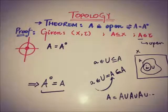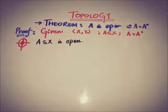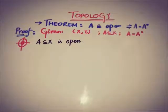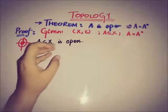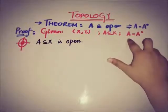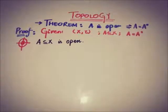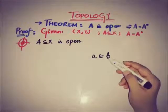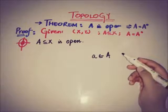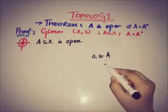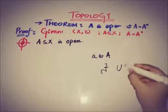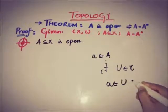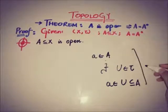Now we prove the converse. The given condition is: X and tau is a topological space, A is a subset of X, and the interior of A equals A. We must prove that A is open. By the definition of interior point, if a belongs to A then for each a in A there exists an open neighborhood U such that a belongs to U and U is a subset of A.